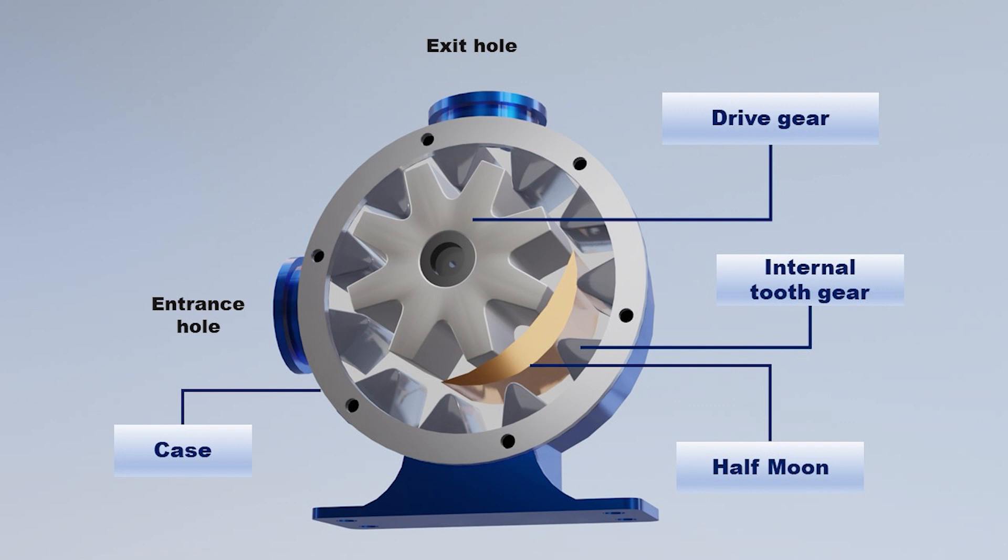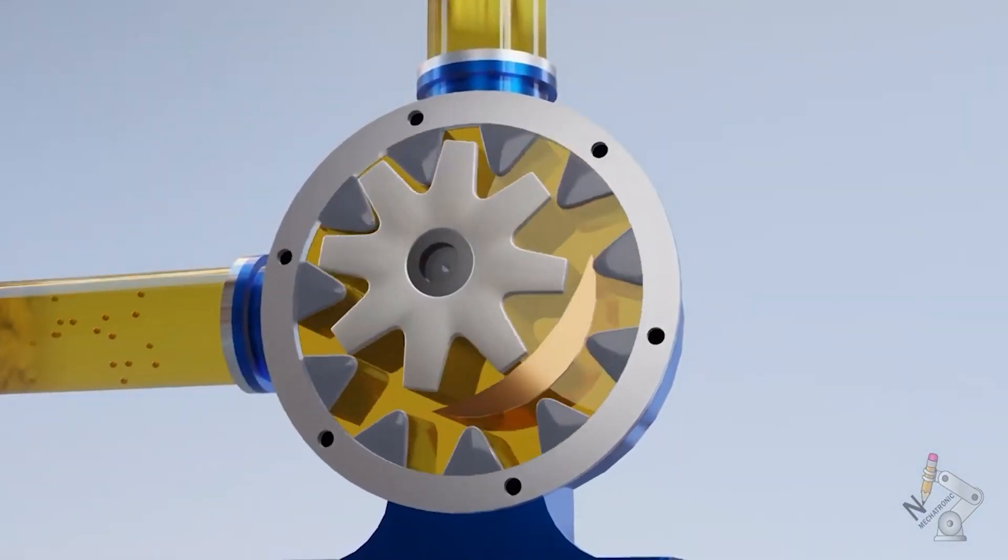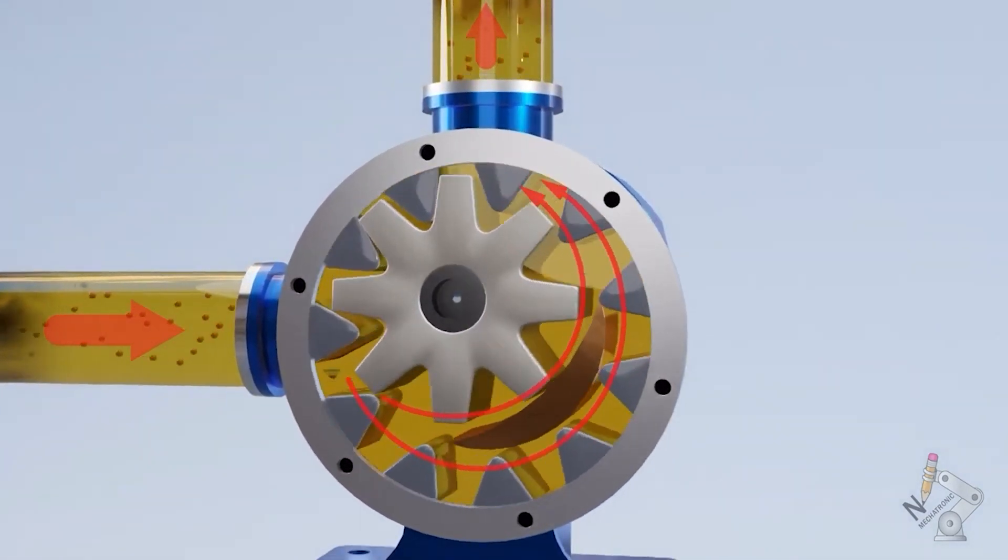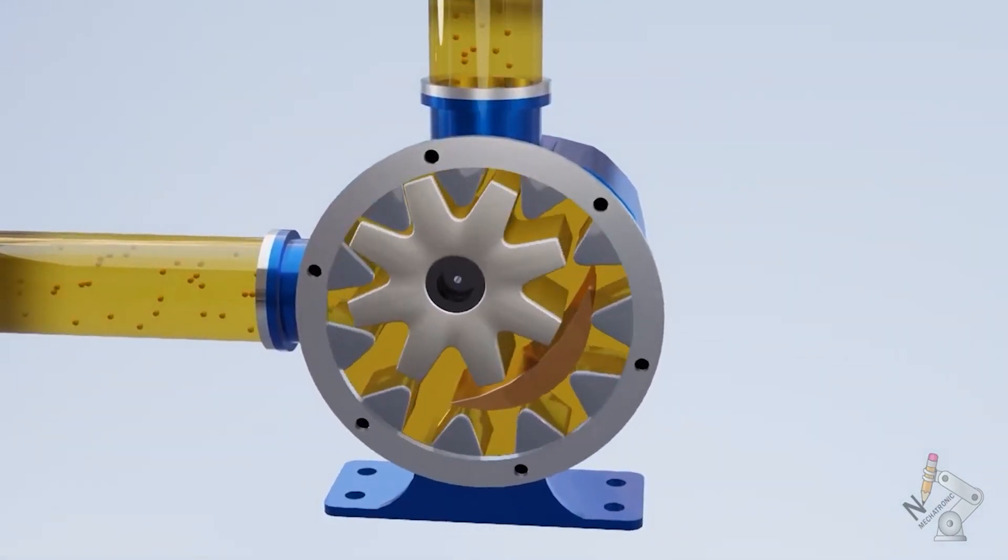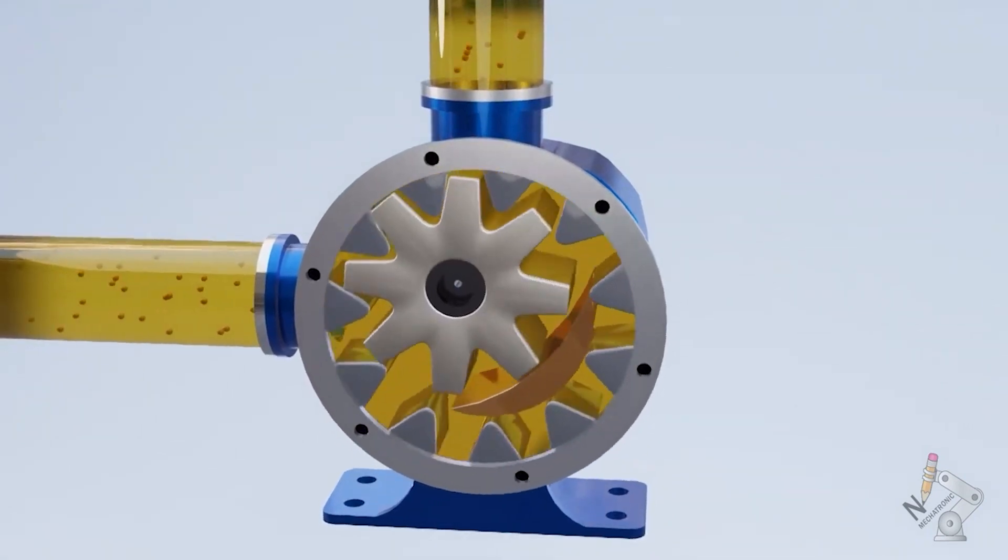The operation is as follows. The fluid enters through the inlet hole and follows its path between the gear teeth and the crescent, thus forming the pressure chambers. The liquid is transported to the discharge port. The meshing of the two gears and the reduction in clearance forces the liquid from the pump to pass through the discharge port.